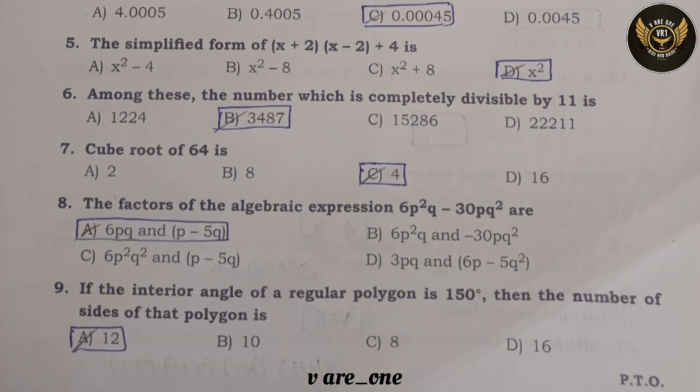Sixth question: among these, the number which is completely divisible by 11 is option B: 3487.